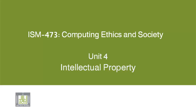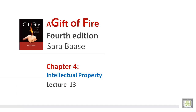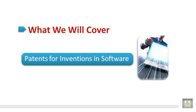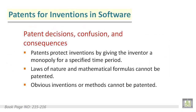Hello everybody, welcome to lecture 13 of our course Computing Ethics and Society. This is the last lecture of chapter 4, Intellectual Property, and we're going to discuss the topic of patents for innovations in software: patent decisions, confusion, and consequences.